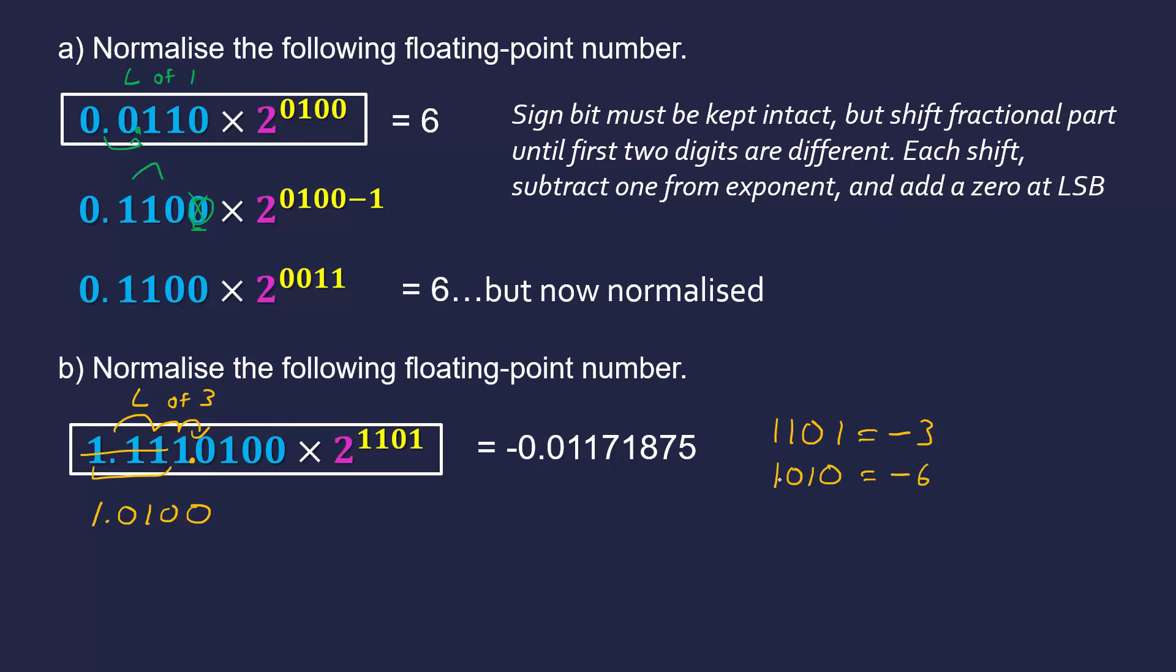1, 0 is minus 6, so my exponent is now going to be 1, 0, 1, 0, so it's this times by 2 to the power of 1, 0, 1, 0.